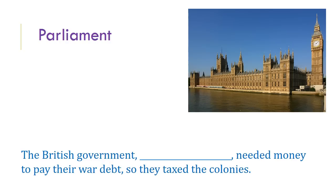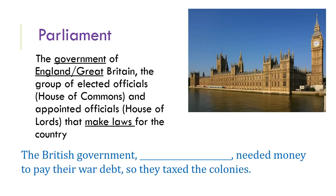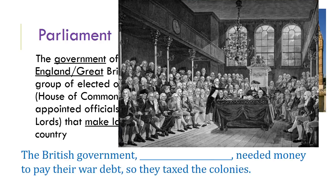Your next word is parliament. Parliament means the government of England or Great Britain — a group of elected and appointed officials who make laws for the country. Similar to our bicameral system with the House of Representatives and the Senate, parliament has the House of Commons and the House of Lords. The House of Lords are appointed — born into wealthy families who have held office for hundreds of years. Parliament becomes a big idea in our Revolutionary War unit because they ignored colonists' desire to have a say in taxation and the acts being passed.